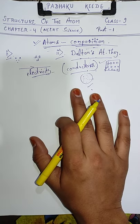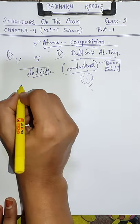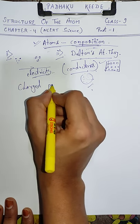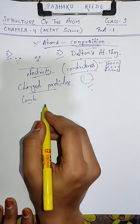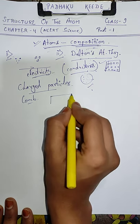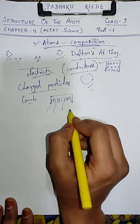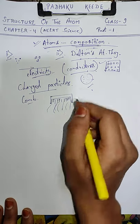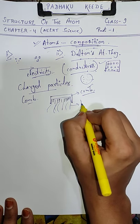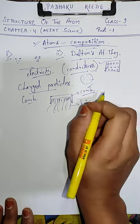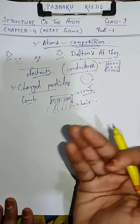Aur woh kis tariqe se hai yeh humay aaghe jaanna hai. Isi series mein scientist ko aaghe chal kar pata laga ki matter ke andar kuch charged particles hote hain. For example, if we start rubbing a comb in our dry hair, the comb will start attracting our hair. Ab yeh attraction kyun hua? Kyunki certain charged particles comb pe hain, aur opposite charged particles hair mein produce huay hain — jis wajah se inke bich mein attraction ho raha hai. Iska matlab ki matter ke andar charged particles exist karte hain.